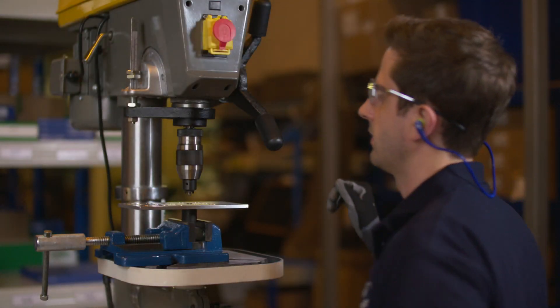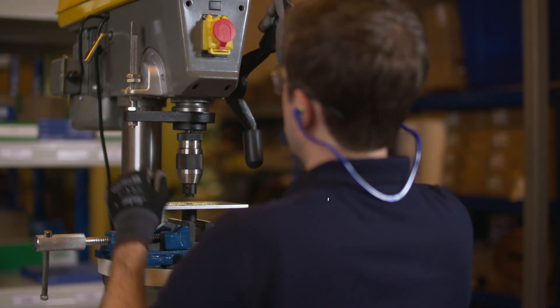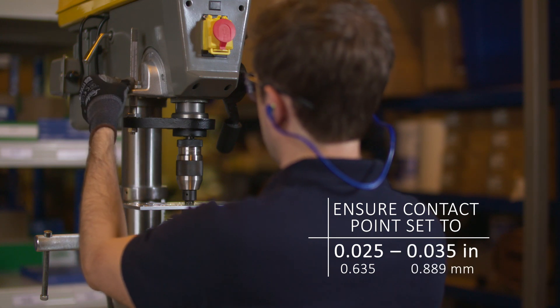Next, we'll set the spindle stop to allow the cutting tool only to cut 25 to 35 thousandths of an inch below the initial contact point.